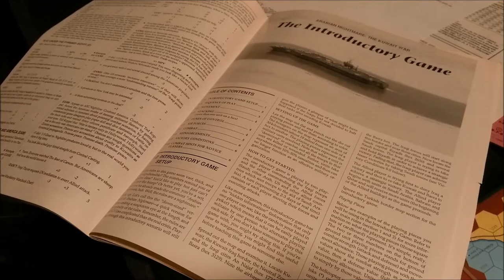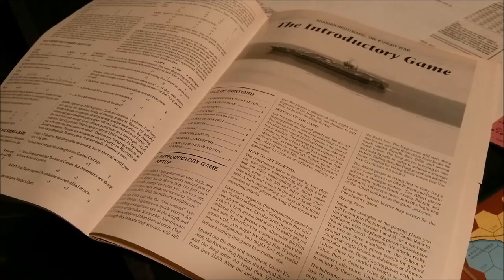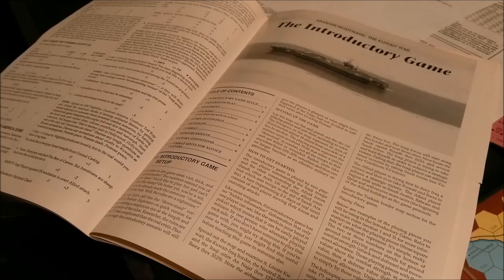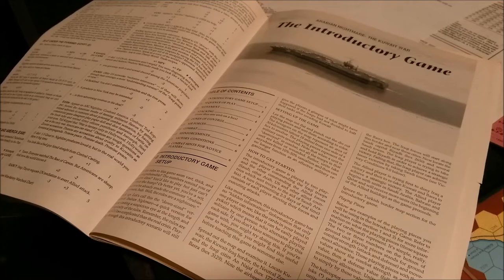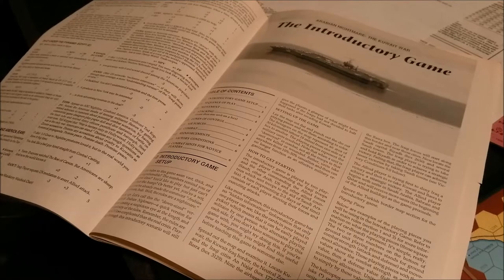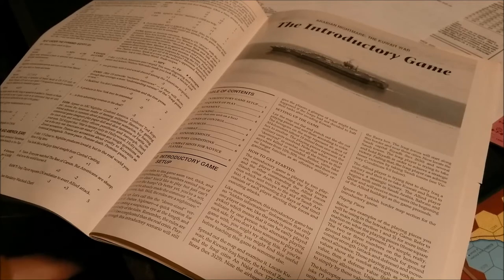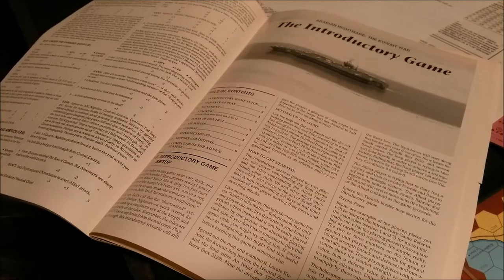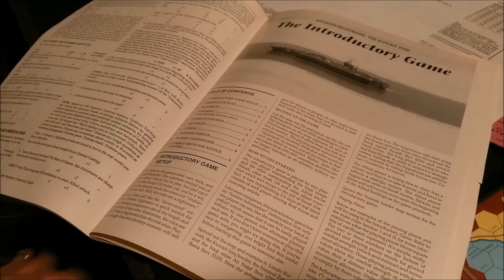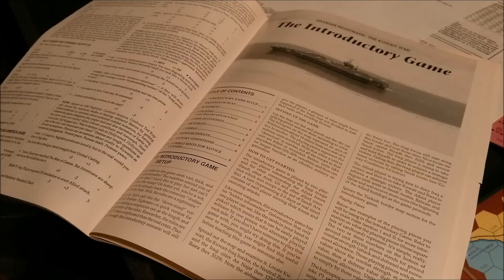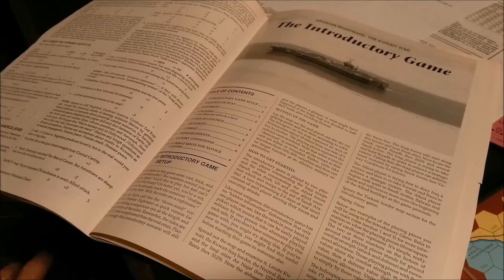In the table of contents we have introductory game setup, sequence of play, movement, stacking, zones of control, air forces, which in this game are basically just air points. In the more advanced games they actually have air units with information on them for air to air, air to ground, that type of thing. But in this case we just use air units as air points.